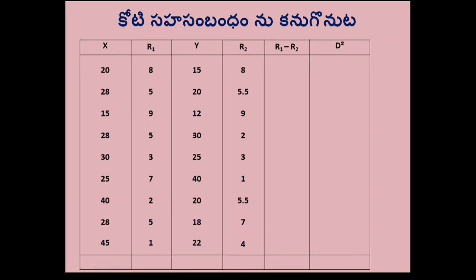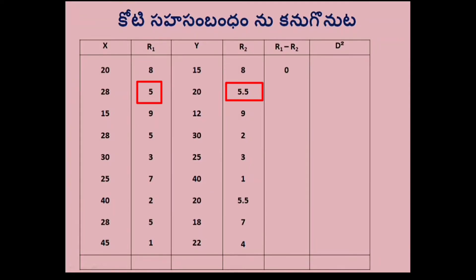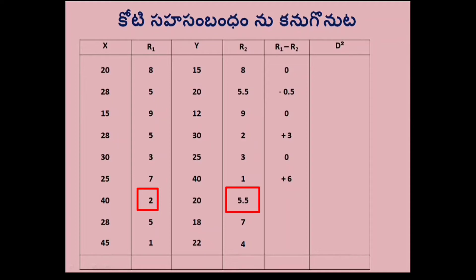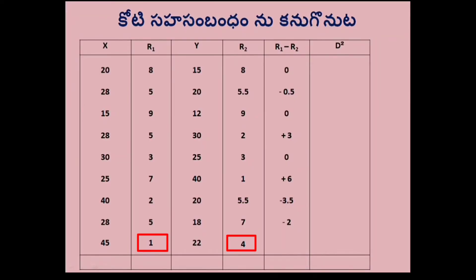R1 minus R2: 8 minus 8 equals 0; 5 minus 5.5 equals minus 0.5; 9 minus 9 equals 0; 5 minus 2 equals 3; 3 minus 3 equals 0; 7 minus 1 equals 6; 2 minus 5.5 equals minus 3.5; 5 minus 7 equals minus 2; 1 minus 4 equals minus 3. So all R1 minus R2 values are found. Next is D squared.